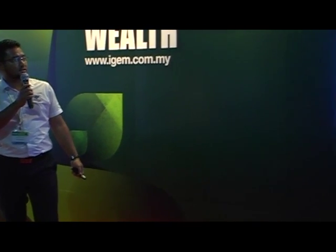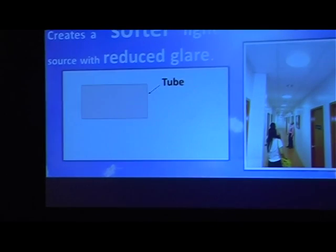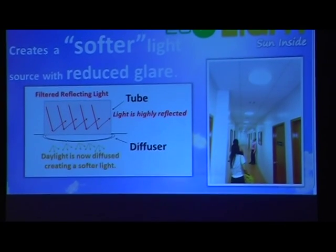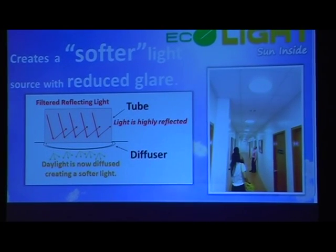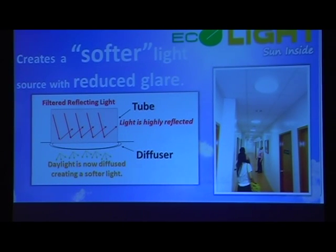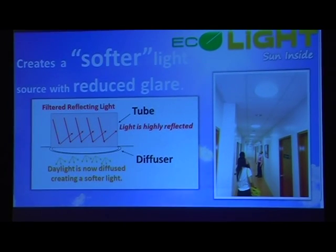The last specification is the diffuser. The diffuser also has options. This is the last part — how the light comes out and is delivered. It creates a soft light; the source feed reduces glare. Filtered reflecting light travels through the tube and then the diffuser distributes the light.